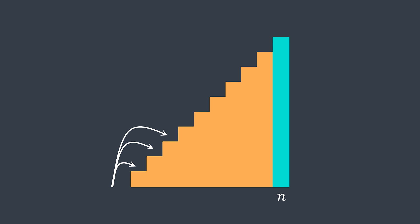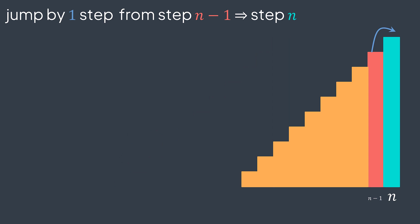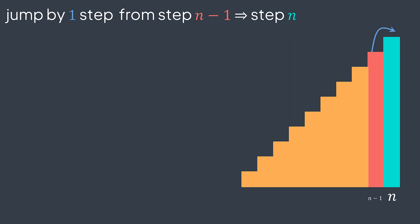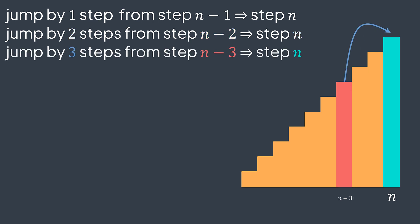First question: what are the steps from where we can jump to reach the nth step? We saw that we can jump by one, two, or three steps. So you can either be on step n minus one and jump by one step, or on step n minus two and jump by two steps, or on step n minus three and jump by three steps.